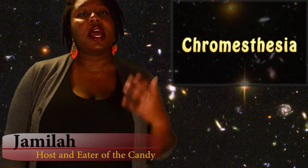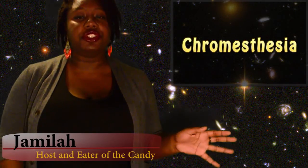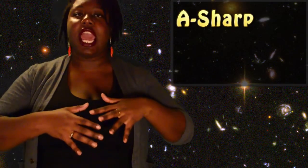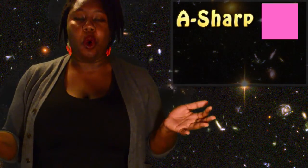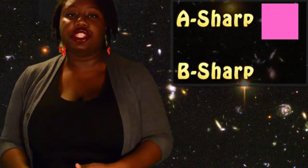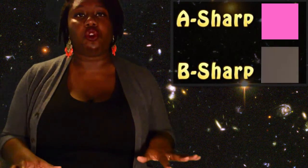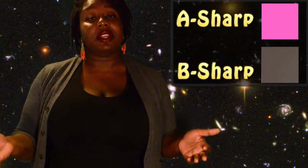Chromesthesia is when a certain sound turns into a color for a person. So an A-sharp might be a rose pink or a B-sharp might be a muddy gray. It's a pretty rare condition but at the California Institute of Technology researchers are trying to give blind people the ability to see in that way.